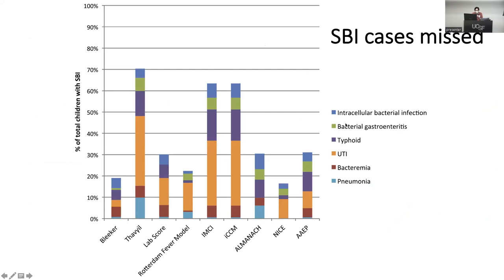The types of cases missed included a lot of typhoid, some intracellular infections, most rules missed at least some patients with bacteremia, some pneumonia, and a lot of UTIs — especially for rules that don't include urinalysis.